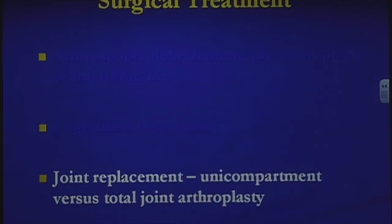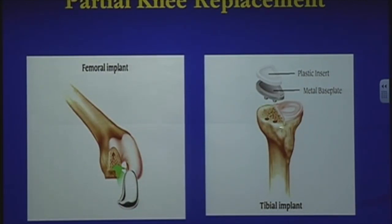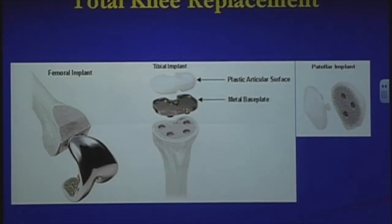For joint replacement, we have two options: partial knee (unicompartmental) and total knee arthroplasty. For a partial knee, we take a saw, remove the arthritic area, and glue a metal cap on the end of the thigh bone. For the tibia, we cut away the arthritic bone, maintaining the cruciate and collateral ligaments, then glue the tibial base plate onto the tibia. A plastic insert locks into that tibial base plate.